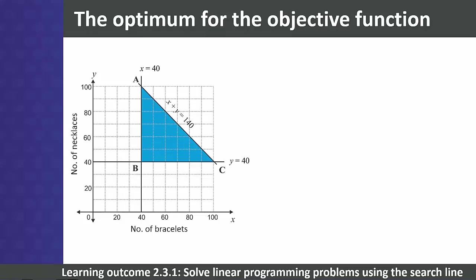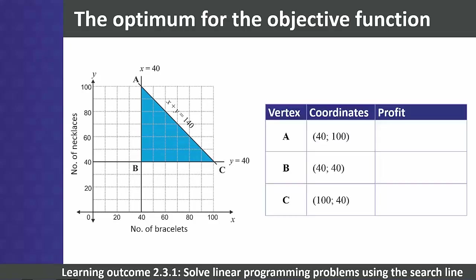The best solution always occurs on one of the vertices of the feasible region. We have labeled our vertices A, B, and C. To find the maximum profit — the method used at Level 3 — we substitute the x and y values from each vertex into the objective function and calculate the profit for each pair of quantities.